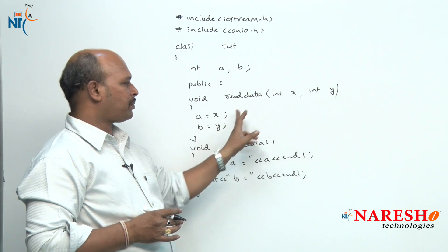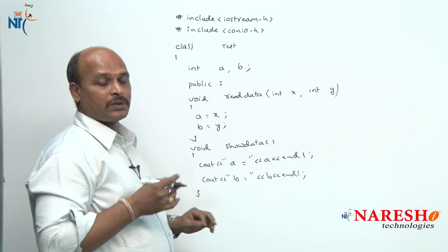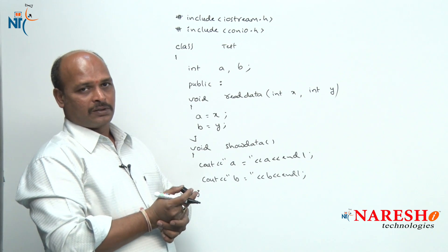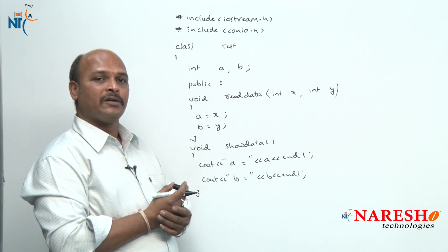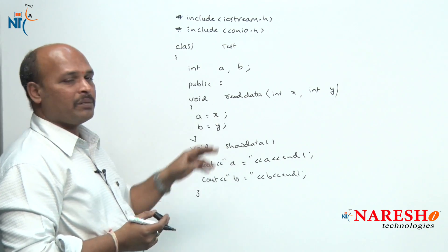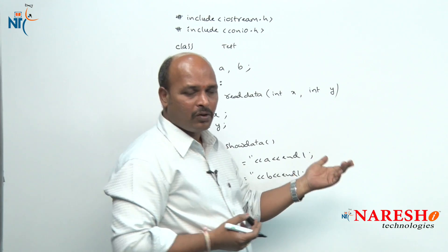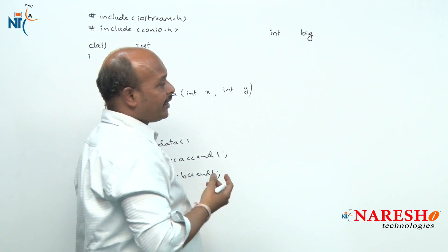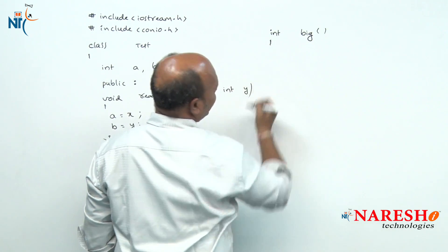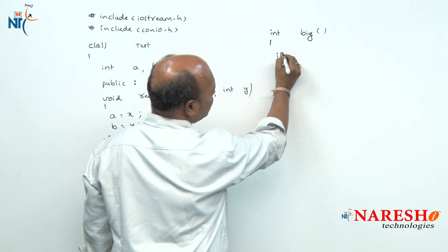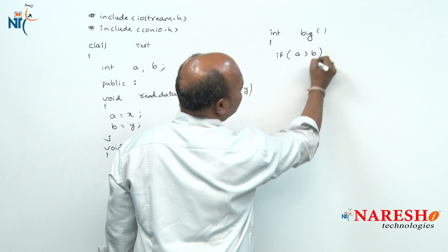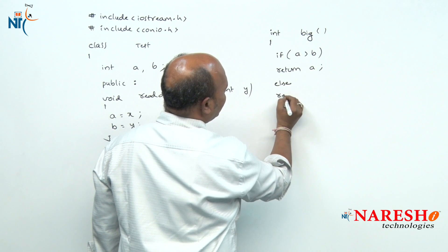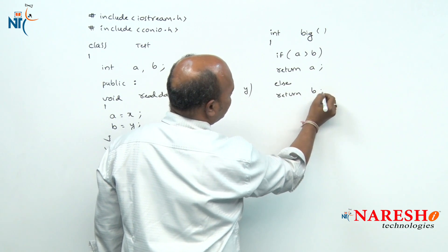Now my requirement is to find the biggest number among a and b, so I need one more function. That function is int big. Inside it I write: if (a > b) return a; else return b. The function definition is now complete.